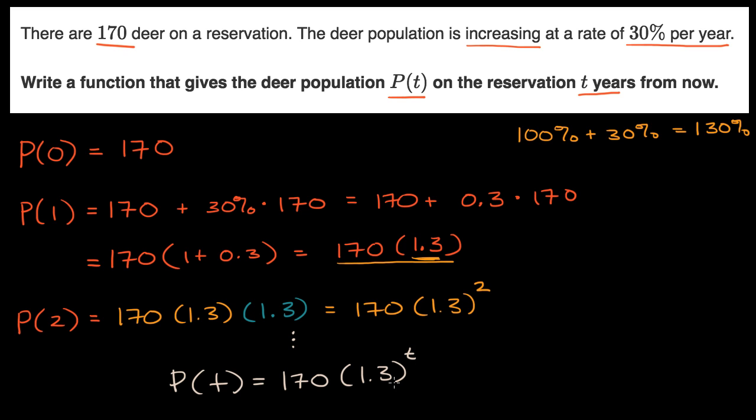So to the t power. Because for every year, we grow by 30%, which is equivalent mathematically to multiplying by 1.3. So after 100 years, it would be 170 times 1.3 to the hundredth power.